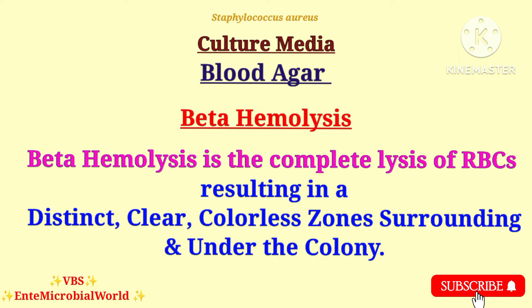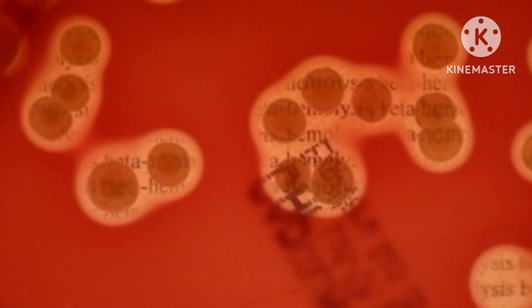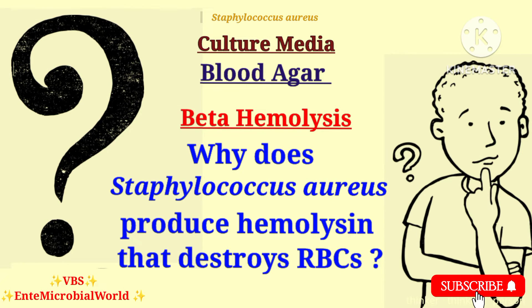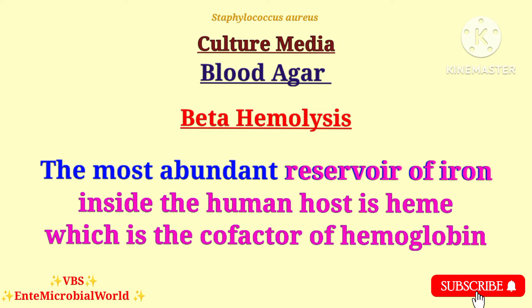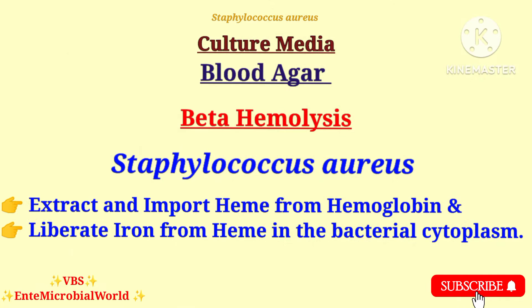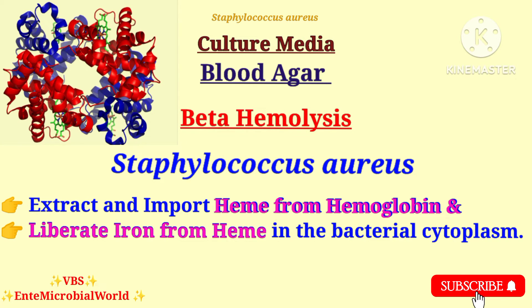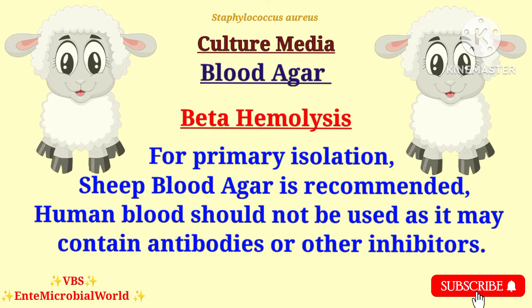Beta hemolysis is the complete lysis of red blood cells resulting in a distinct, clear, colourless zone surrounding and under the colony. Staphylococcus aureus is a pathogenic bacteria that requires iron to carry out vital metabolic functions and cause diseases. The most abundant reservoir of iron inside the human host is heme, the cofactor of hemoglobin. Staphylococcus aureus extracts and imports heme from hemoglobin and liberates iron from heme in the bacterial cytoplasm. For primary isolation, sheep blood agar is recommended.